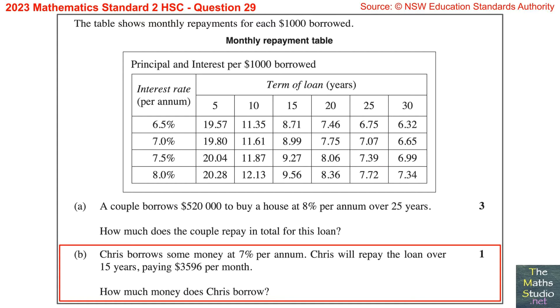Part B: Chris borrows some money at 7% per annum. Chris will repay the loan over 15 years, paying $3,596 per month. How much money does Chris borrow?